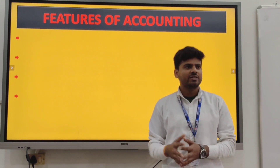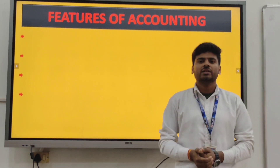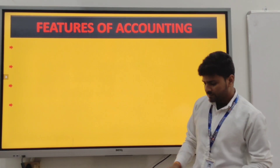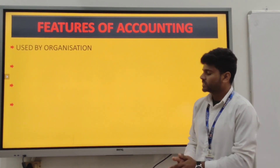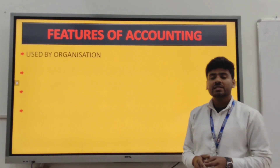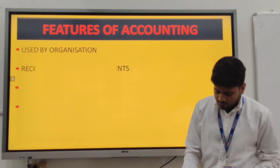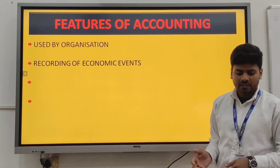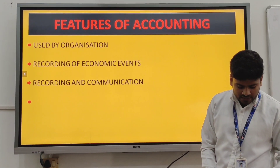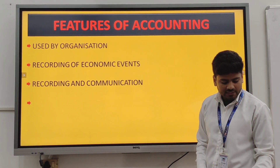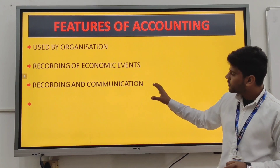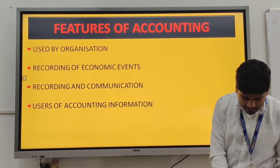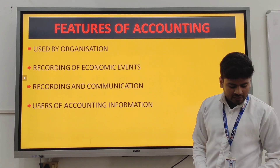Thank you. Good morning everyone. Today my topic is the features of accounting. The first feature is that accounting is used by organizations — it is applied by any organization performing business activities, whether for profit or non-profit. The second feature is the recording of economic events concerned with financial transactions. The third feature is recording and communication — accounting is a process of identifying transactions to be recorded and checking financial transactions in a systematic way. The fourth feature is the user of accounting information — accounting is complete when information about economic events is communicated.